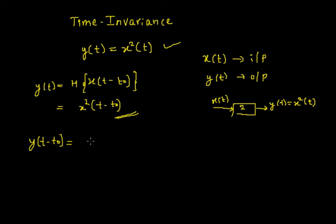Therefore, I get y of t minus t naught is equal to x square of t minus t naught. This is there in the second half. As these two are equal, we can say that the given system is time invariant.